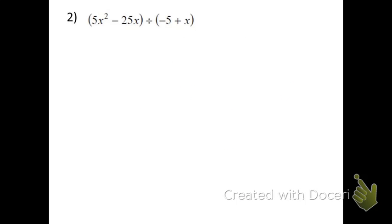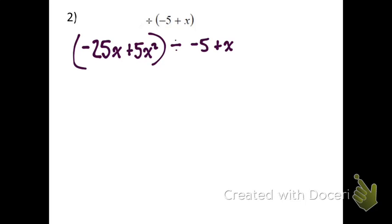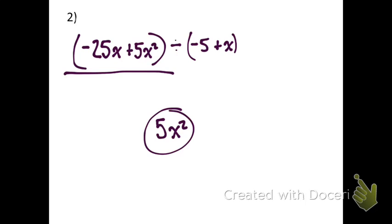I'm actually going to change it even more. Let's pretend that it actually said negative 25x plus 5x squared, all of that divided by negative 5 plus x. Now this one's different because it's obviously out of order. Since it's out of order, we need to put it in order. Starting with the first polynomial, you would notice there's a polynomial in the second degree. x squared is the largest, so we want to start off with writing 5x squared.